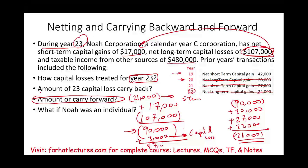What are we going to do with this $87,000? We're going to carry these losses forward indefinitely until we use them up. In the foreseeable future, as an individual, NOAA could generate capital gains up to $87,000 and not pay any taxes on them, because NOAA can use the carryover of long-term capital losses to wipe out any capital gains.